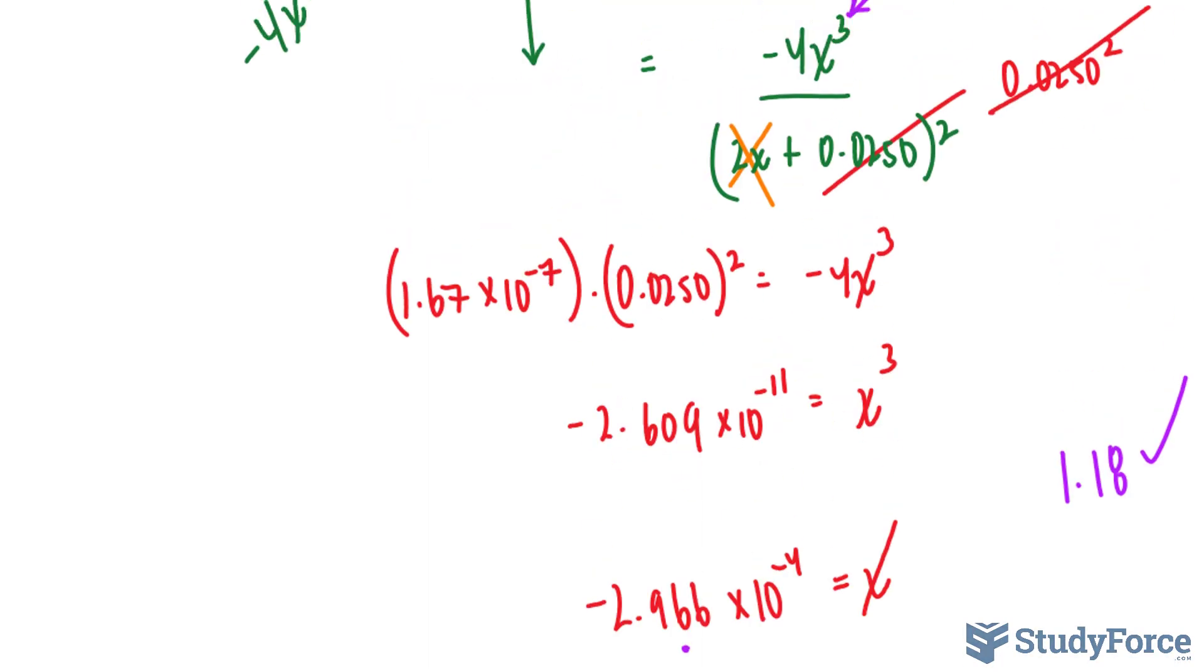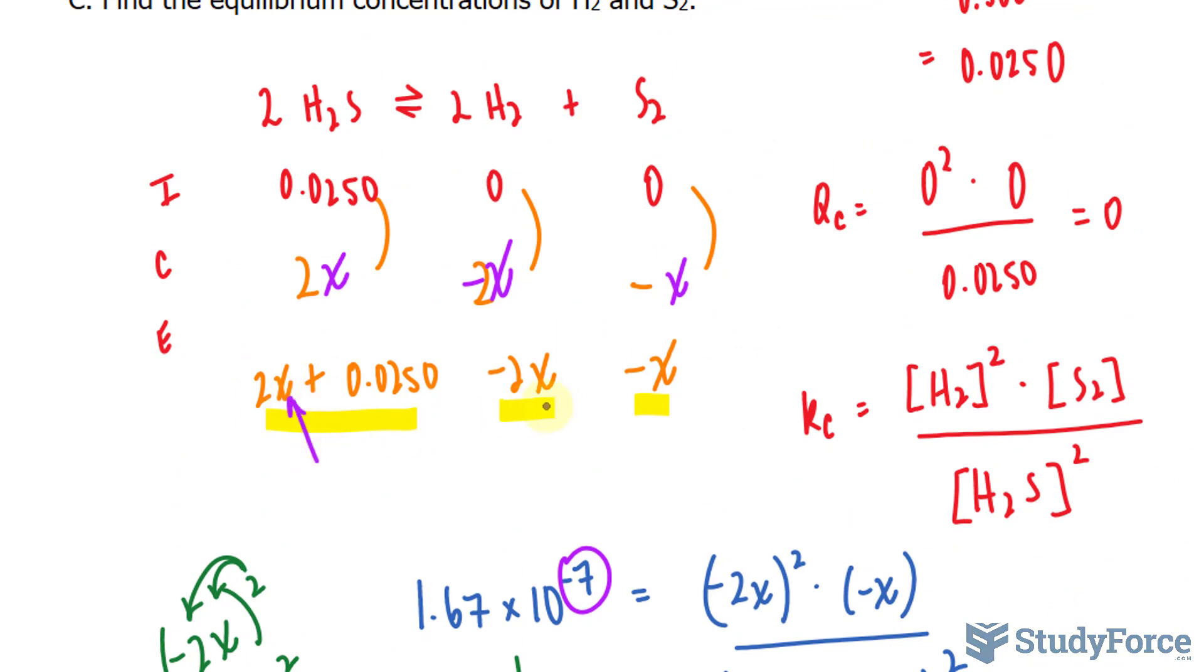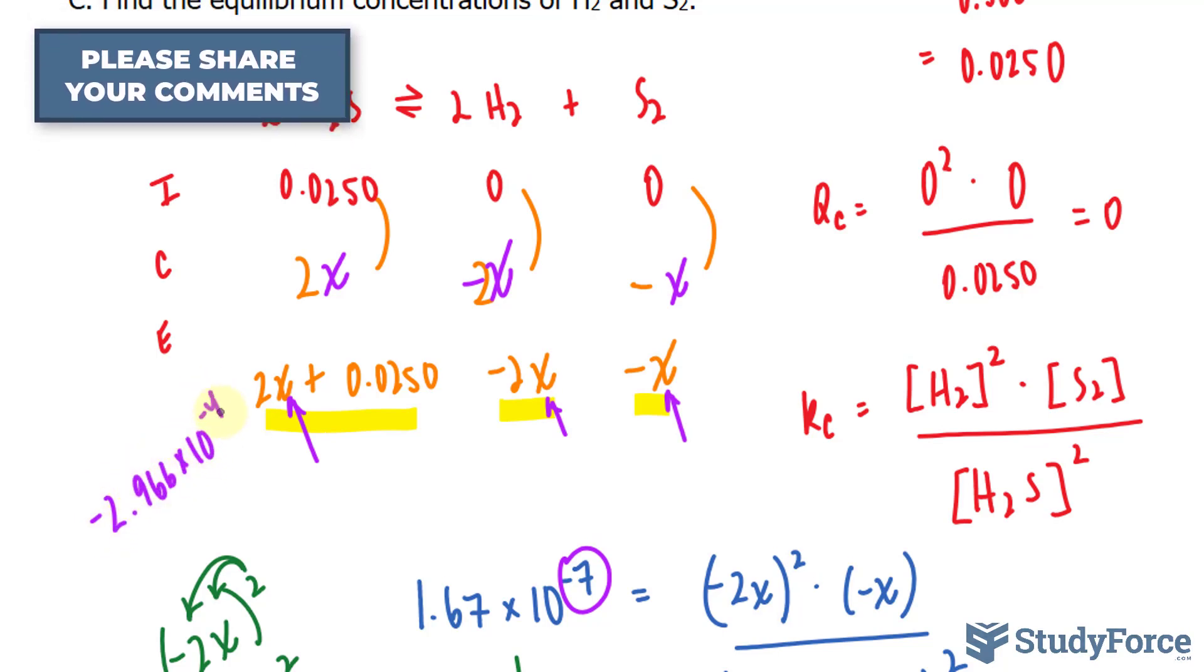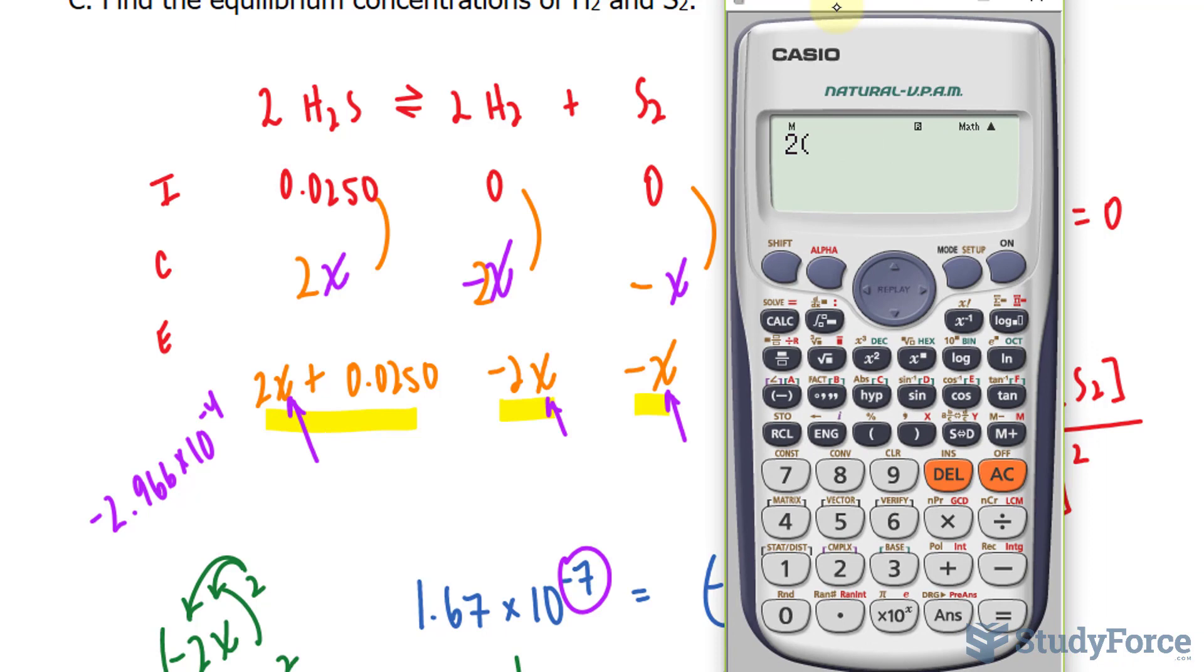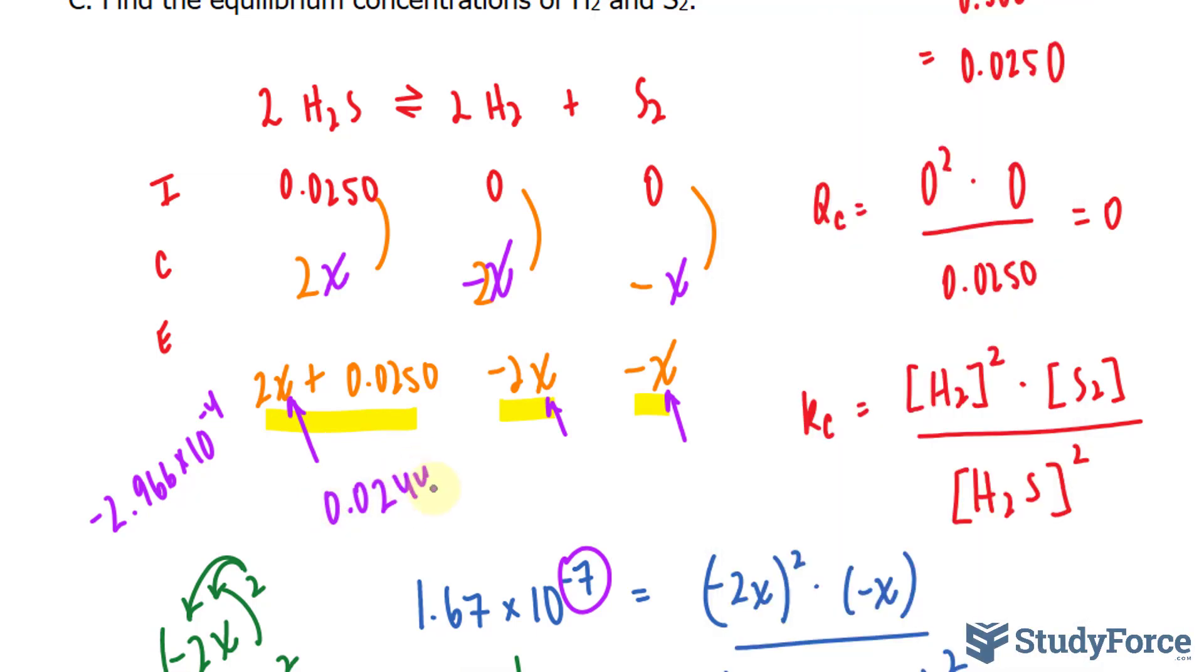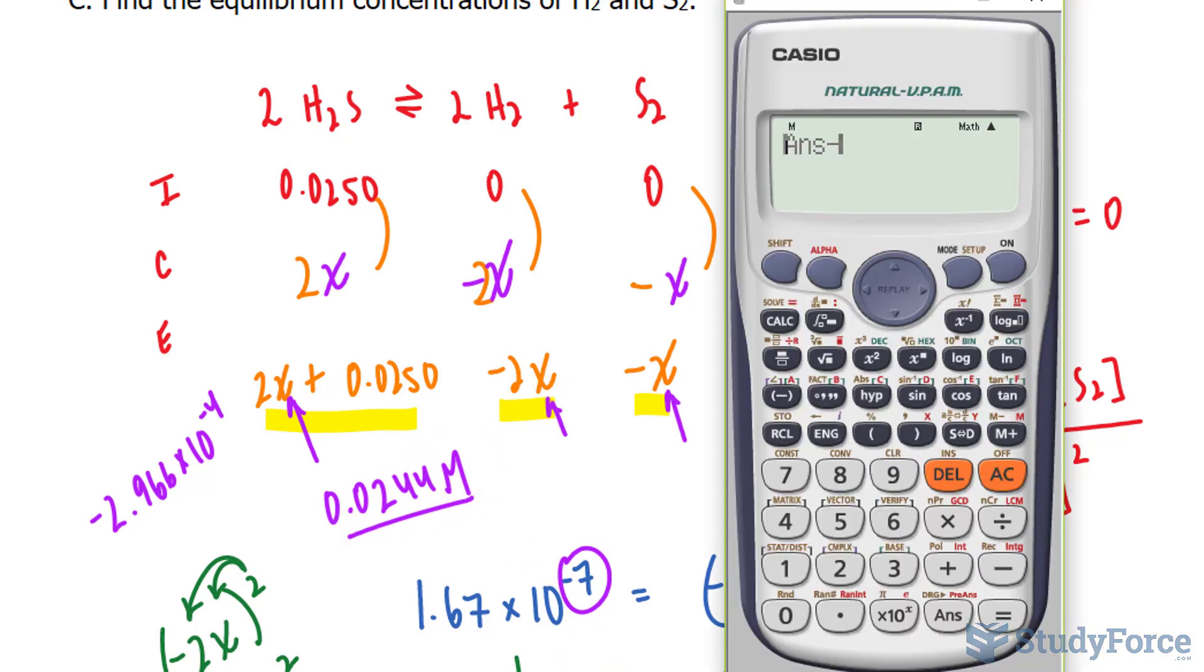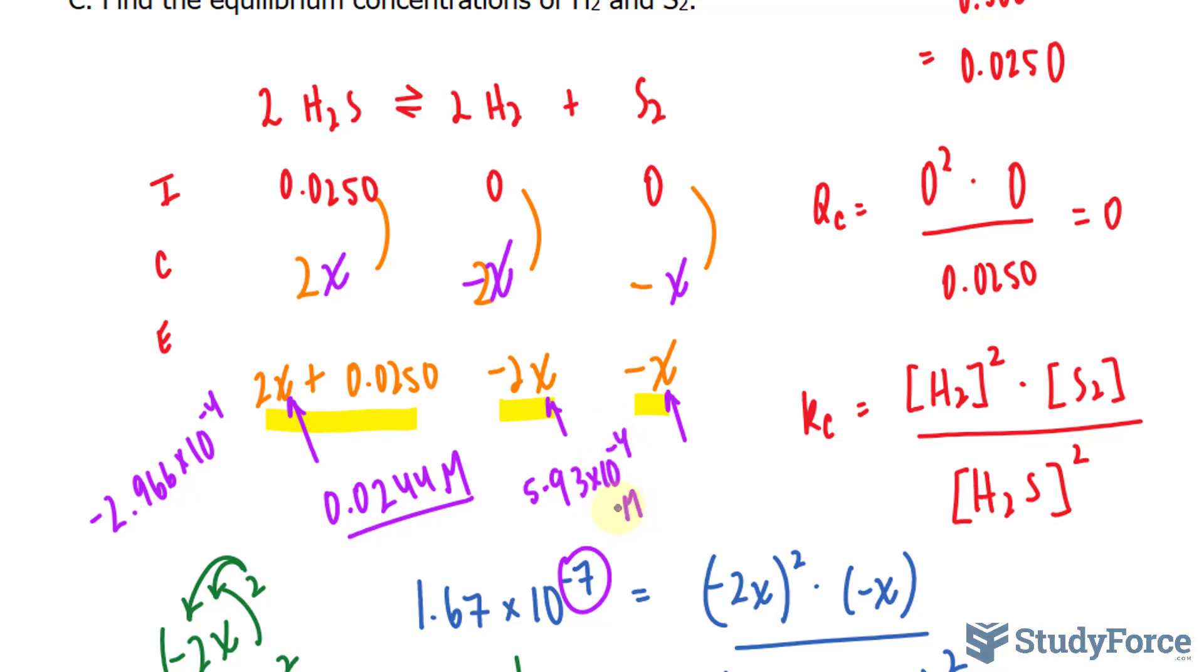Now, just like before, given that we have our X, we can now substitute that number into here, here, and here. So we have negative 2.966 times 10 to the power of negative 4. I'll substitute it into there, there, and there. Let's start with the first one, 2 times negative 2.966 times 10 to the power of negative 4 plus 0.025 gives us the following. Let's do the same thing there, negative 2 times negative 2.966 times 10 raised to the power of negative 4. And that gives us 5.933 times 10 to the power of negative 4 as its concentration.